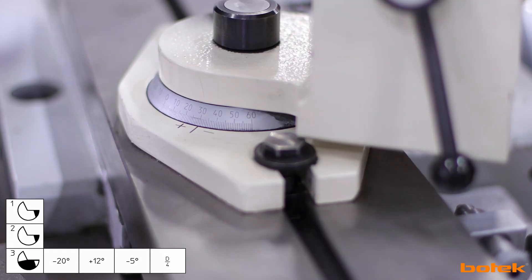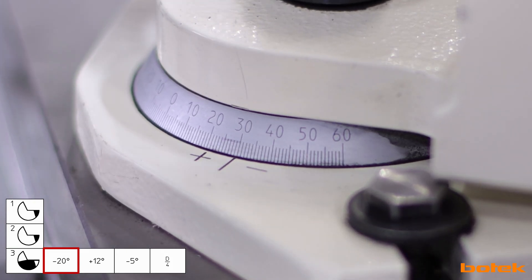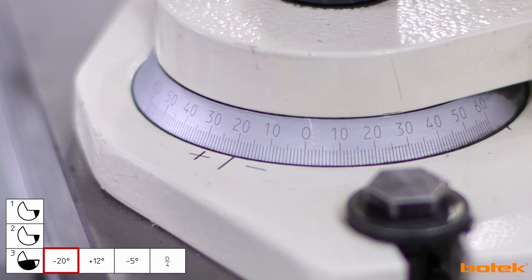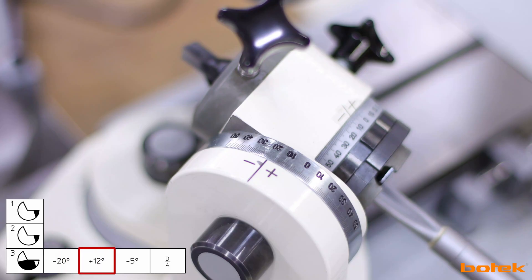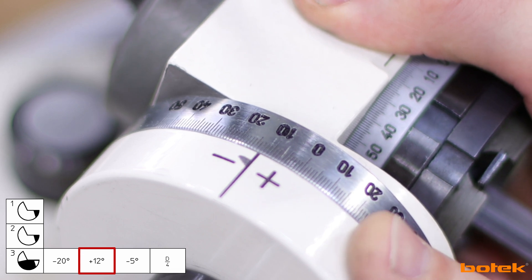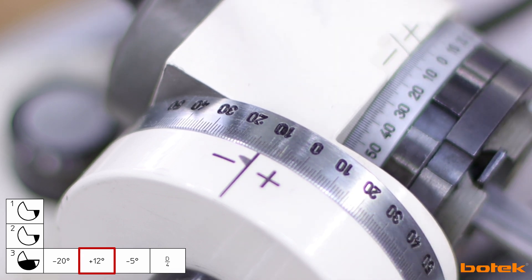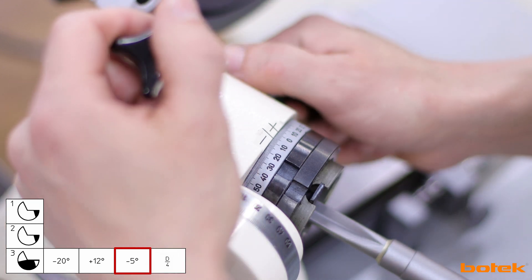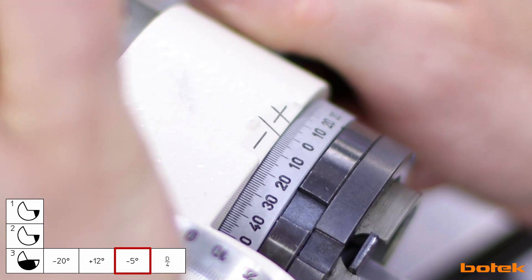To grind the inside cutting edge set the swivel angle to minus 20 degrees, the tilt angle to plus 12 degrees, and set the torsion angle to minus 5 degrees.